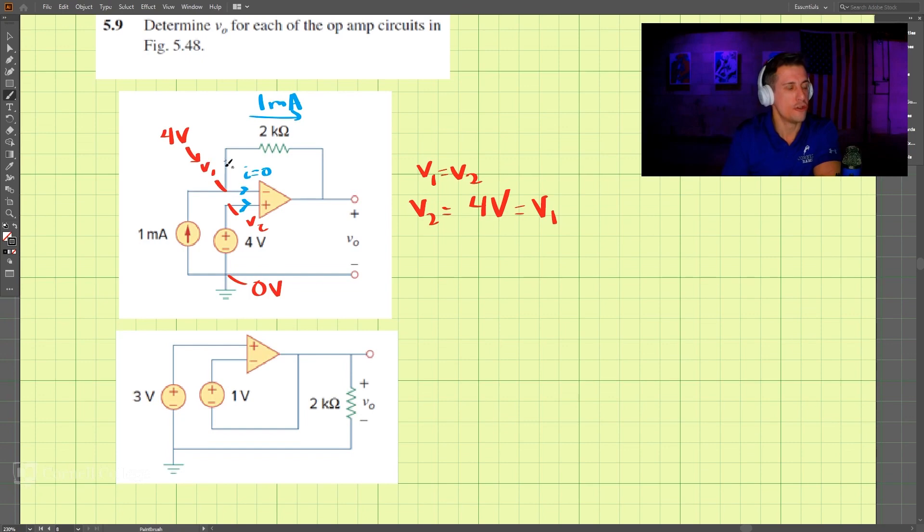So we're going to do Ohm's law here. Ohm's law over here is four minus v0 over the resistance two kilo-ohms is equal to the current, which is one milliamp.